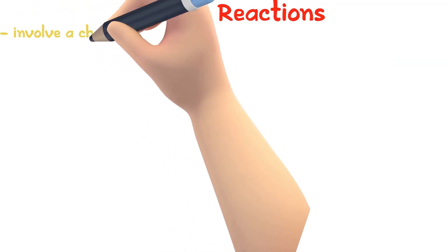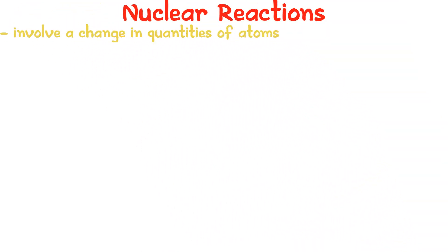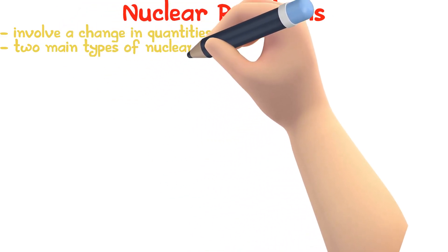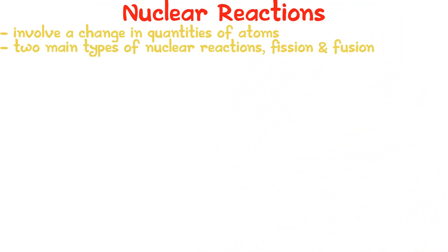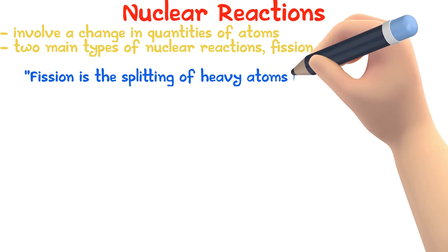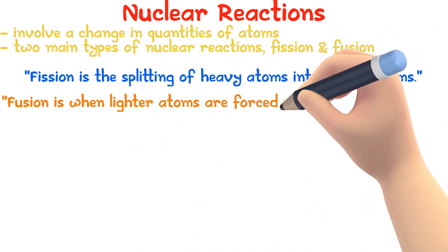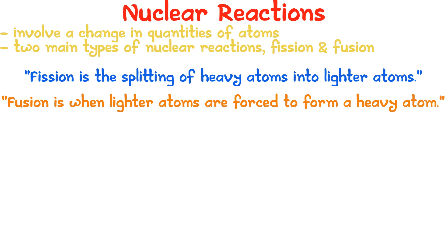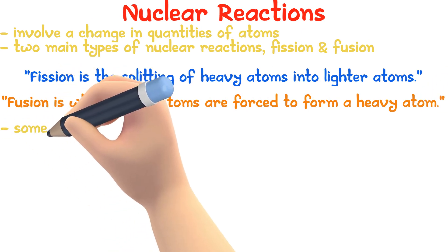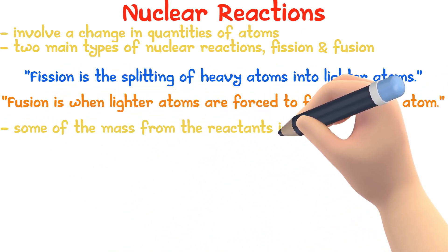Nuclear reactions involve a change in quantities of atoms. The two main types of nuclear reactions are fission and fusion. Fission is the splitting of heavy atoms into lighter atoms, and fusion is when lighter atoms are forced to join and form heavy atoms. In both processes, some of the mass from the reactants is converted into energy.